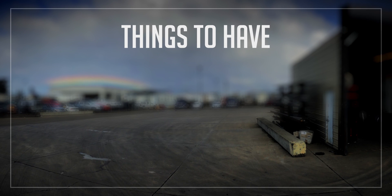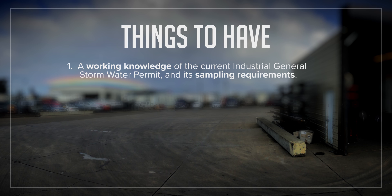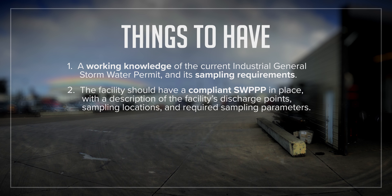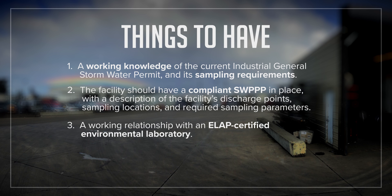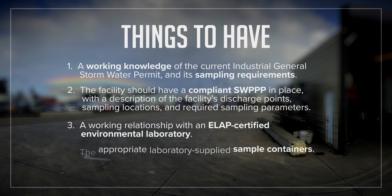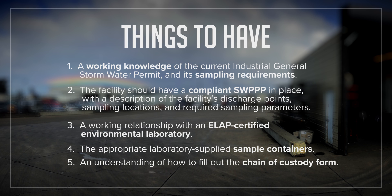This video is not intended to be a stormwater sampling crash course — there are a few things we are expecting you to know. As a QISP, you should have a working knowledge of the California Water Board's Industrial General Permit and its sampling requirements. The facility you are working with should have a compliant SWIP in place with a description of discharge points, sampling locations, and required sampling parameters. You should also have a working relationship with an ELAP-accredited analytical laboratory, a sample kit with the correct laboratory-supplied sample containers, and know how to fill out the chain of custody form and deliver samples to the lab within appropriate holding times.